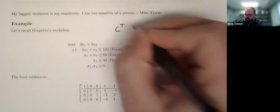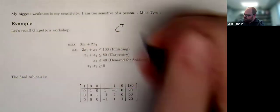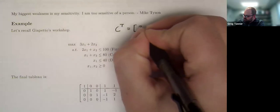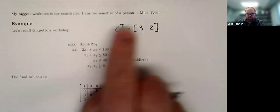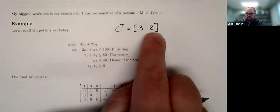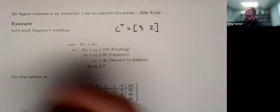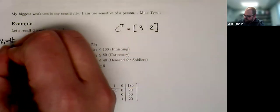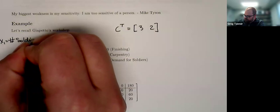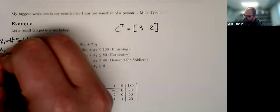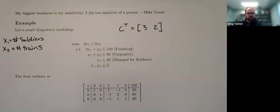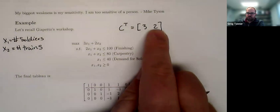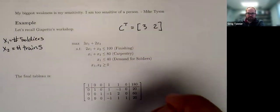So we've got our coefficients in our objective here. And so that's going to be the vector of three and two. Pulling off those coefficients, we'll look at what happens if we change either of those amounts of profit. Remember, X1 is number of soldiers, X2 is number of trains that Geppetto's making in his workshop. And so three and two represent the profit for soldiers and trains, respectively.